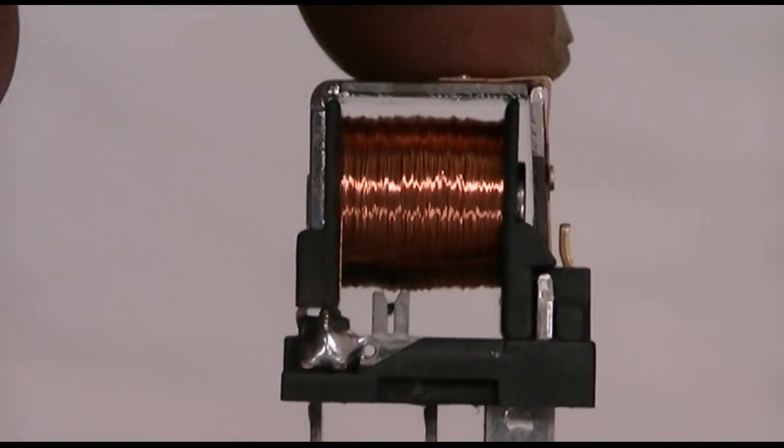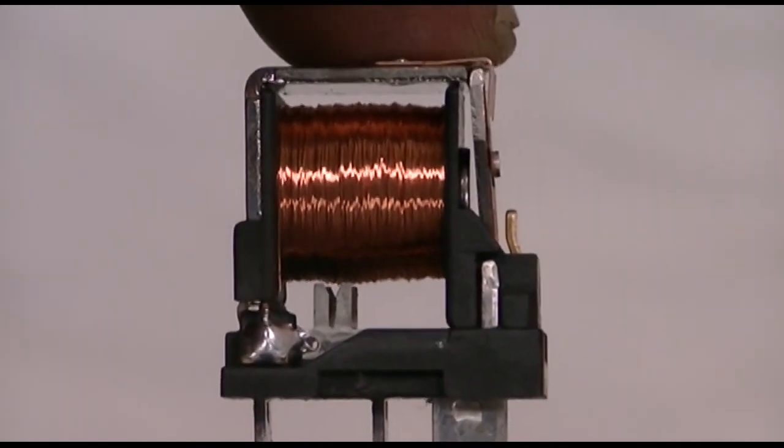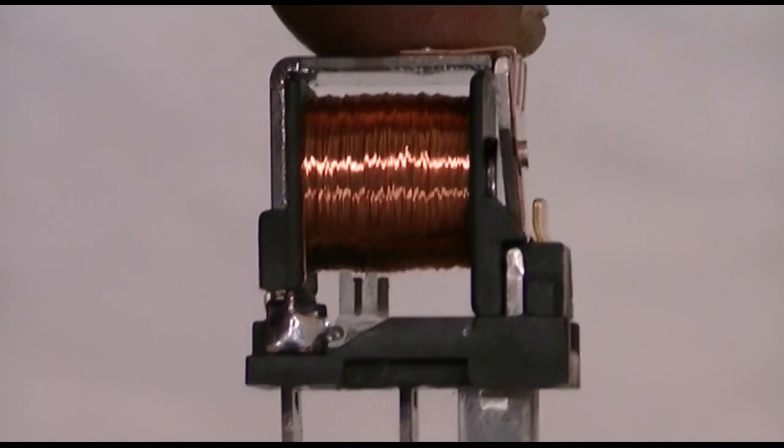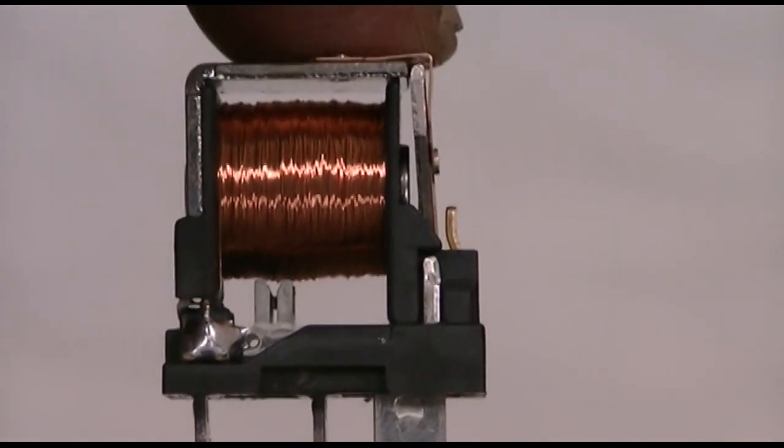Here's a close-up of that relay. You can see the copper windings on the electromagnet and off on the right you can see the brass tab. Those are the contacts that the relay pulls closed when it's energized.